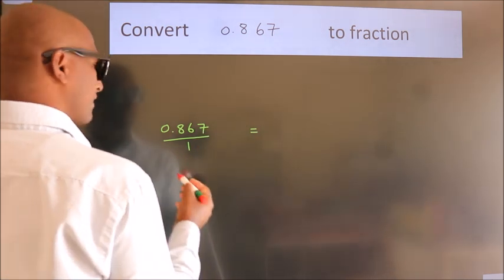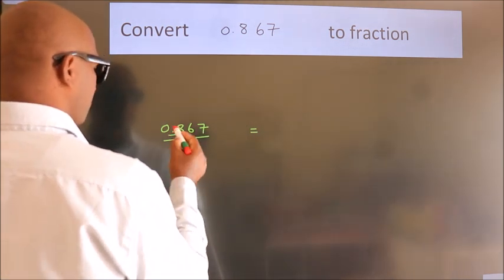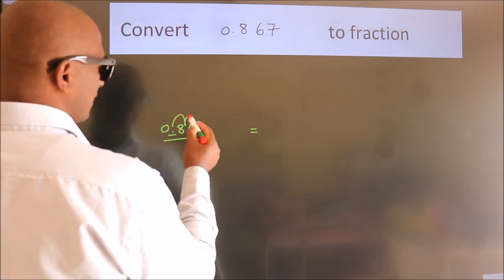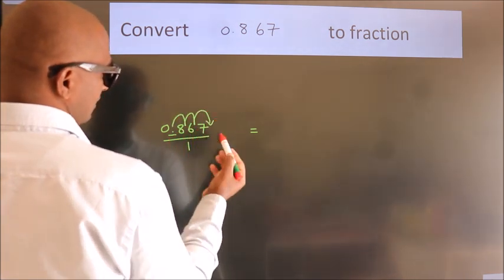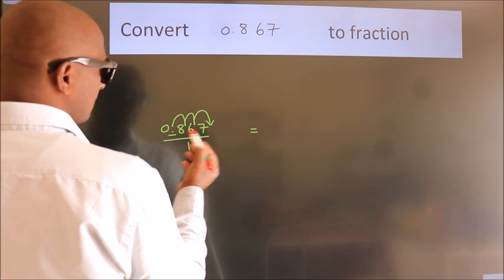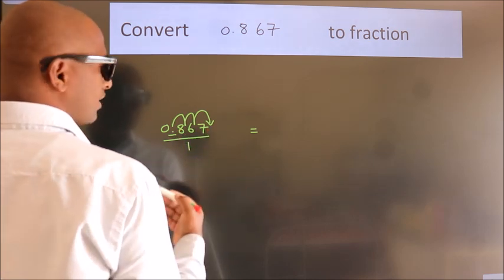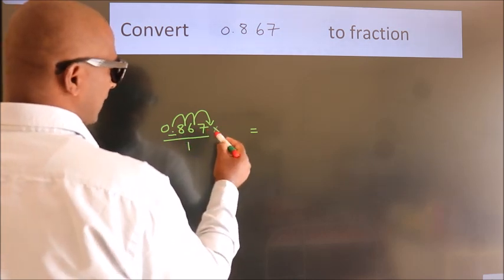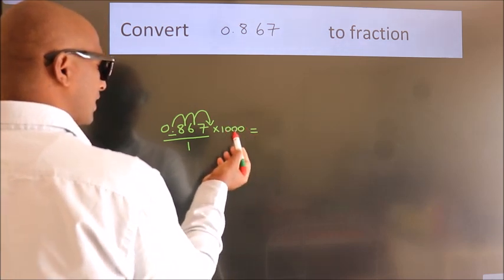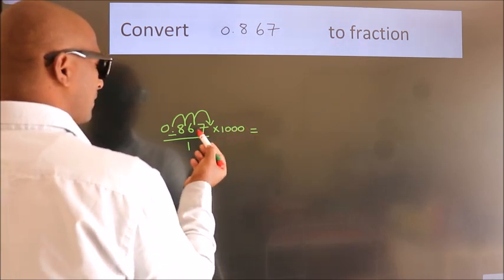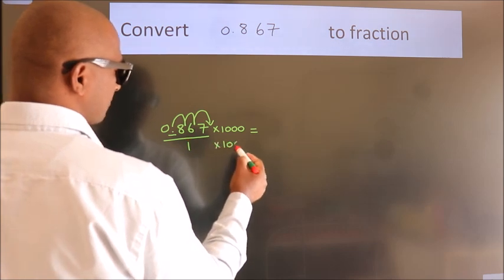we have to move this decimal after 1, 2, 3 numbers. To move this decimal after 3 numbers, we have to multiply it with 1000. Whatever number you are multiplying in the numerator, in the denominator also do the same.